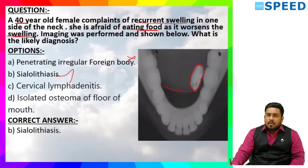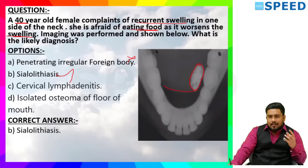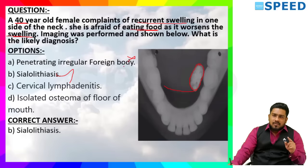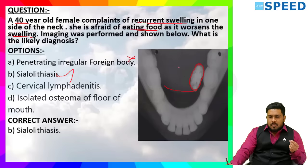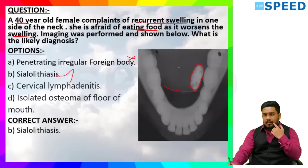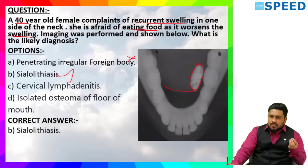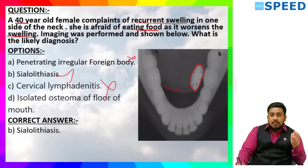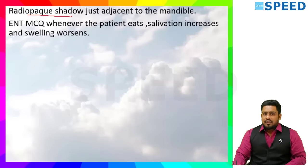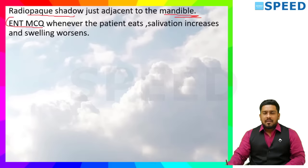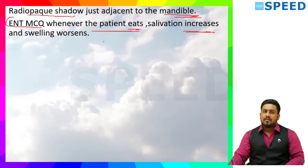It is not a penetrating irregular foreign body — we look at the image and recognize whether it resembles common objects. It is not cervical lymphadenitis — the history goes with sialolithiasis. Nor is it isolated osteoma of the floor of the mouth. The radio-opaque shadow is seen just adjacent to the mandible. It is a question from ENT and radiology-integrated. Whenever the patient eats, salivation increases, which worsens the swelling.